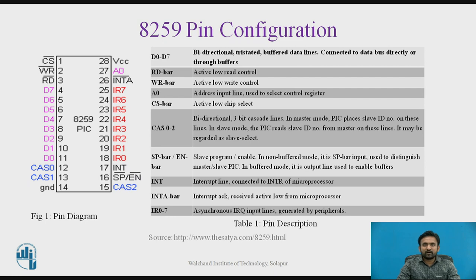Pin numbers 18 to 25 are IR0 to IR7 — asynchronous interrupt request input lines generated from peripherals. INT is the interrupt output and INTA bar is the interrupt acknowledgement received, active low, from the processor. Pin number 27 is A0, which is an address input line used to select the control register. These are the different functions of individual pins of the 8259 IC.